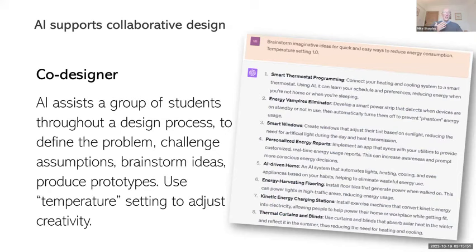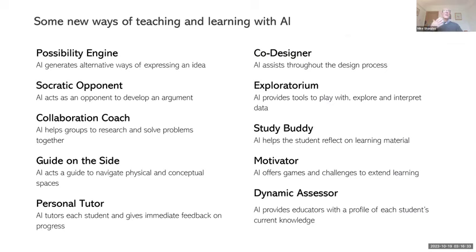Another possibility is as a co-designer — it could assist a group of students throughout a design process. The prompt I gave: 'Brainstorm imaginative ideas for quick and easy ways to reduce energy consumption.' These systems have a temperature setting — the more you increase it between zero and one, the more random but also more creative it becomes. So for brainstorming it could be an assistant, but it could also take you through the whole design process, producing and critiquing prototypes. These are just some of the ways of teaching and learning augmented by AI.